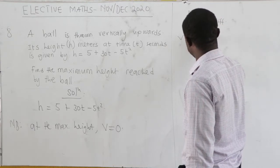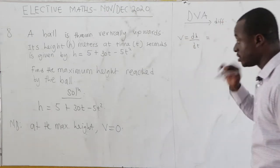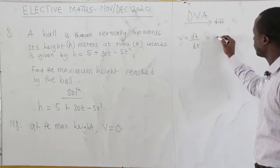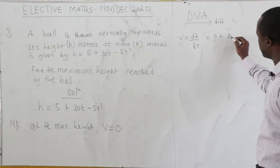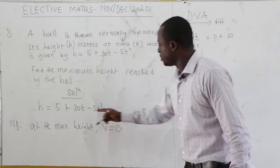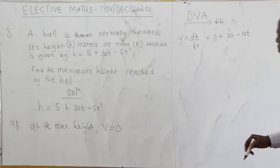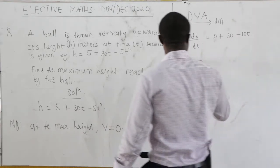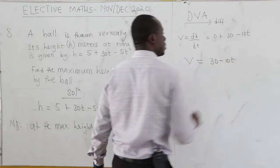We differentiate h to get velocity. V = dh/dt. When we differentiate the constant 5, we get zero. When we differentiate 30t, we get 30. When we differentiate -5t², we get -10t. So V = 30 - 10t.